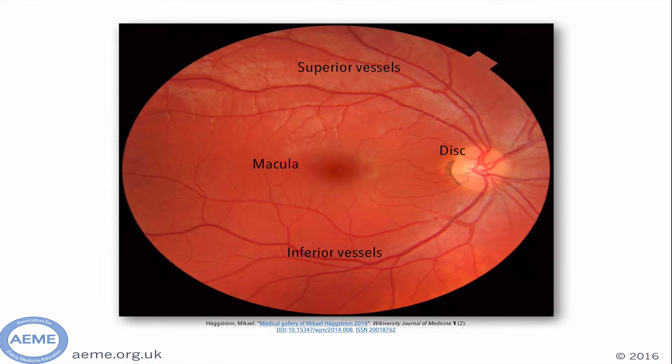This is a brief reminder of the retinal anatomy that you should hopefully be able to see when performing ophthalmoscopy. The first thing to find is the optic disc, then look at the superior and inferior vessels and the area in between, which is the macula.